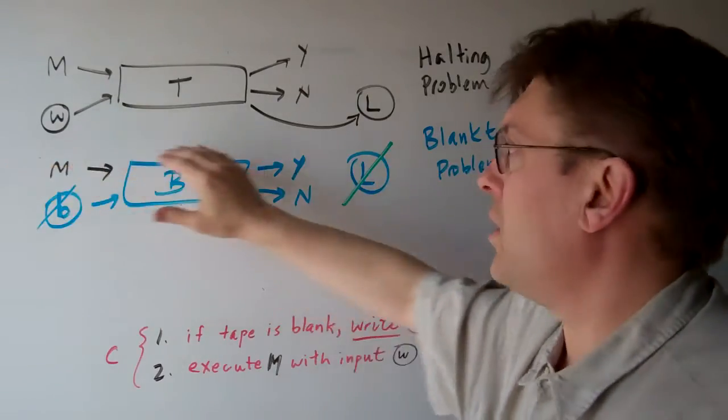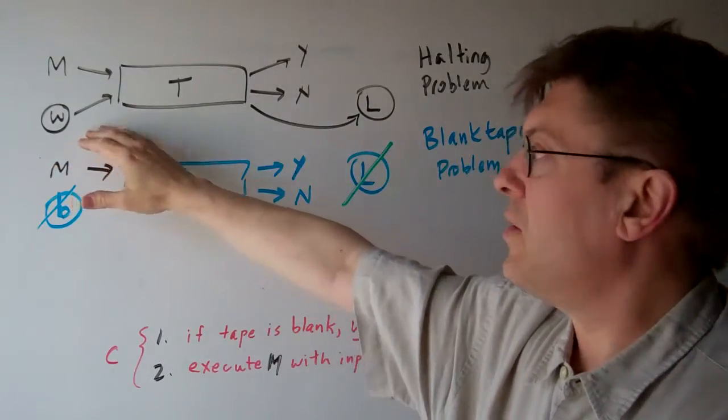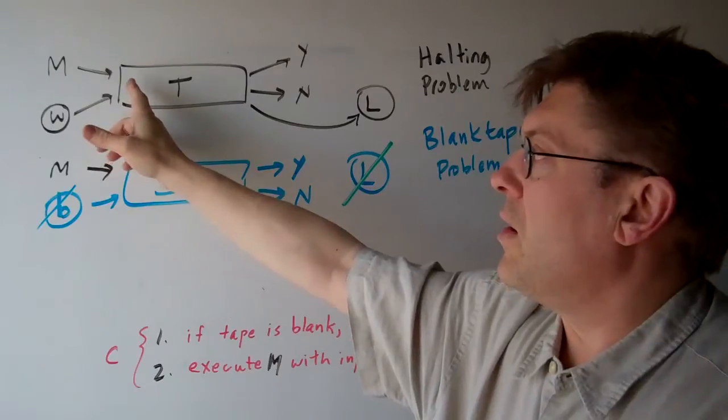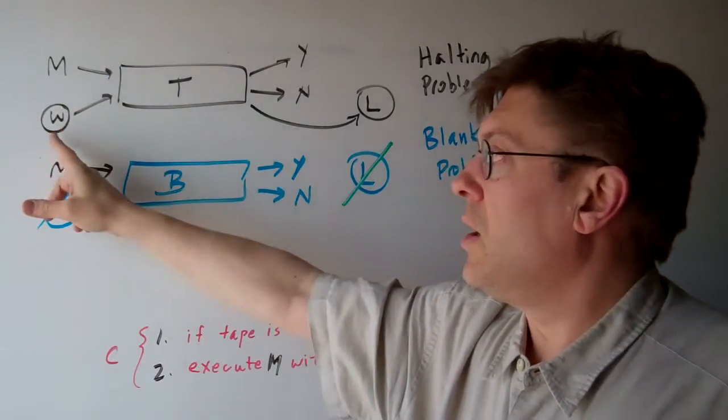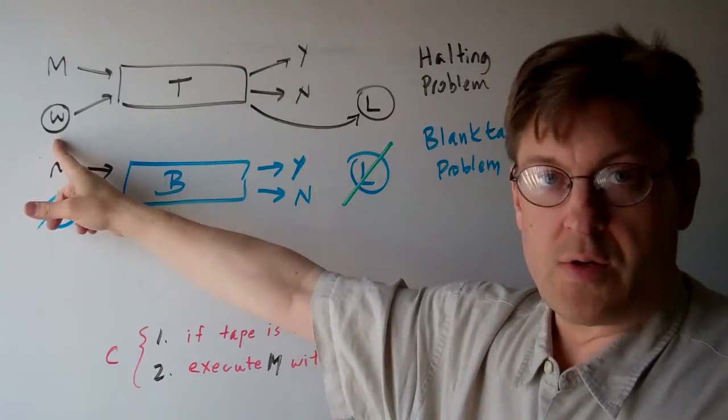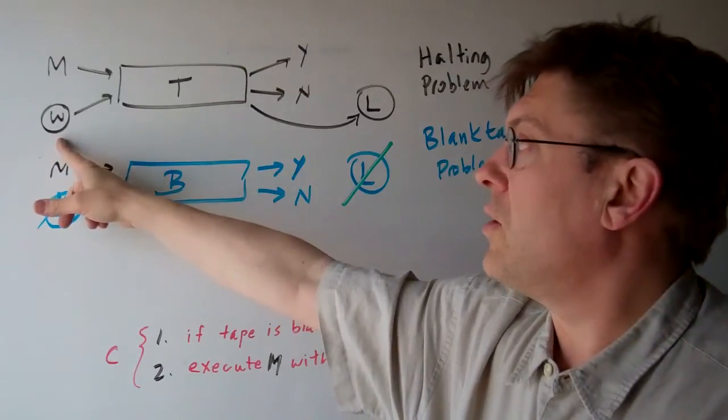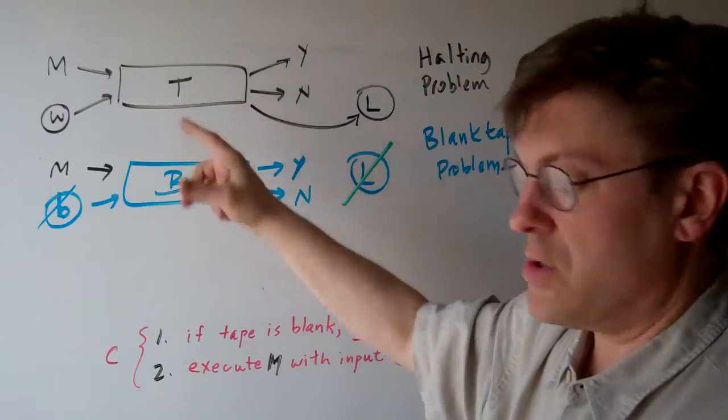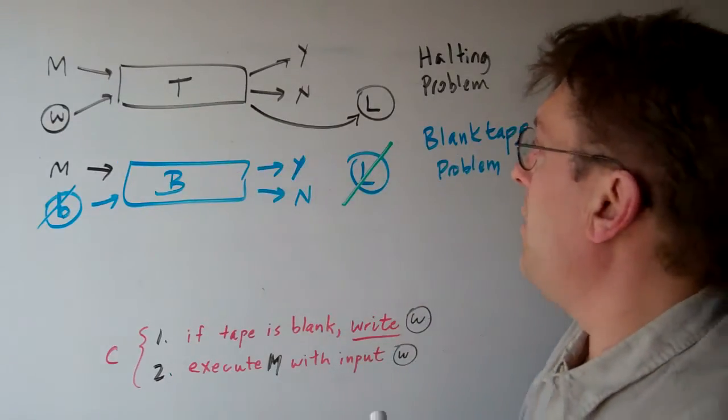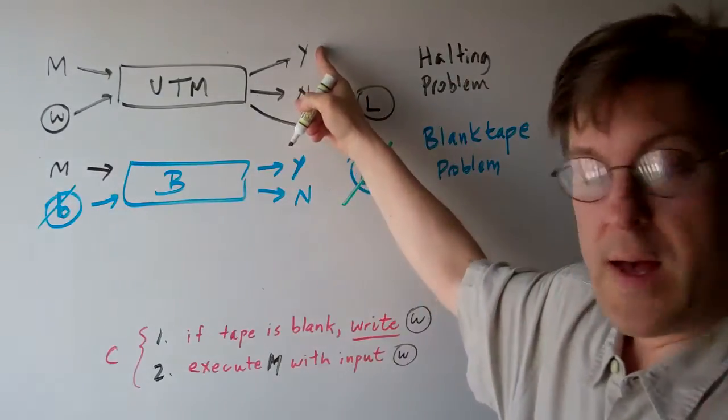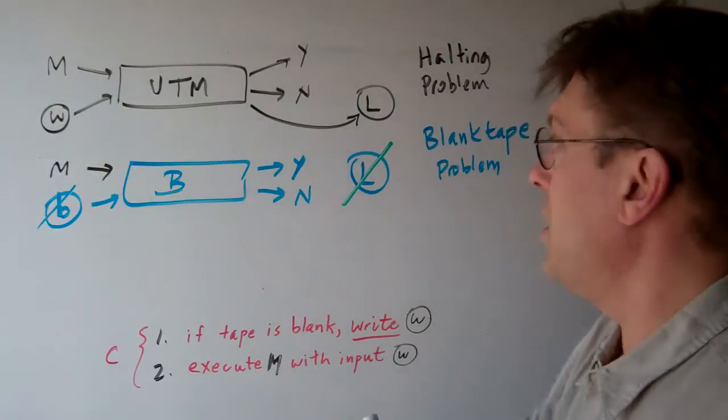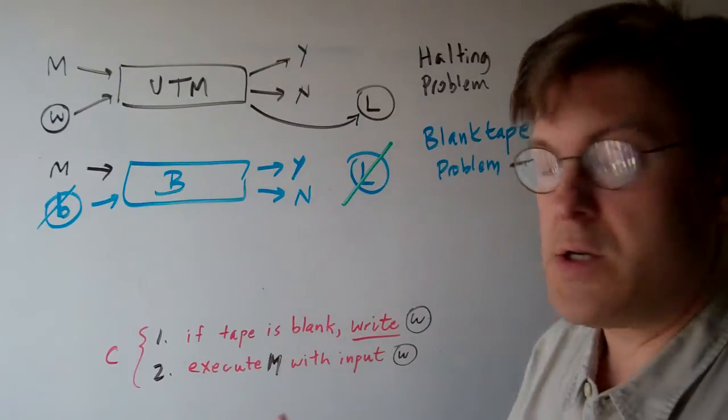Let's review what the halting problem is. The halting problem says that if you input a machine, a Turing machine, and a character string, words, whatever you want to call it, to this machine, this universal Turing machine, that it's going to come up with a yes, this string satisfies the machine, it halts on it, no, the machine crashes,